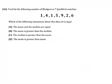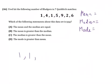So we need to figure out the mean, the median, and the mode. First, it might be helpful to put the data in order. So we have 1, 1, 2, 4, 5, 6, and lastly 9.